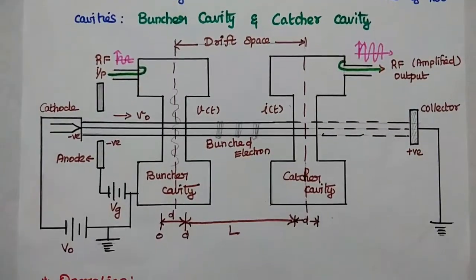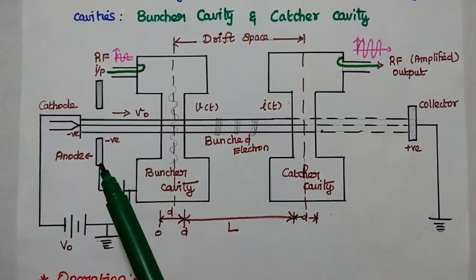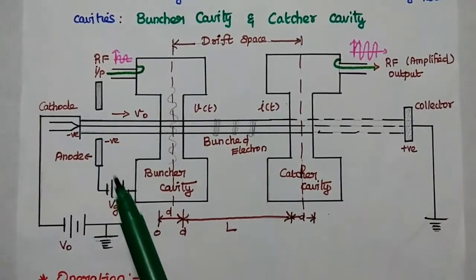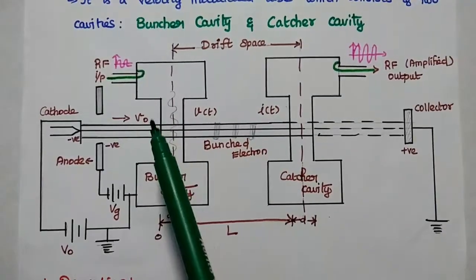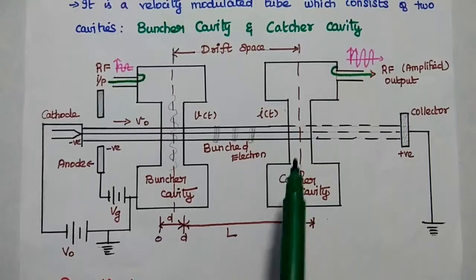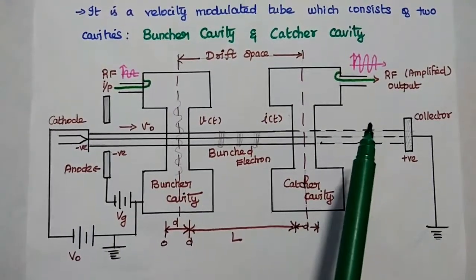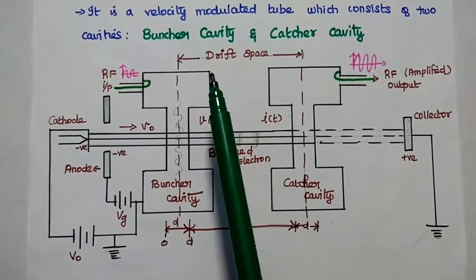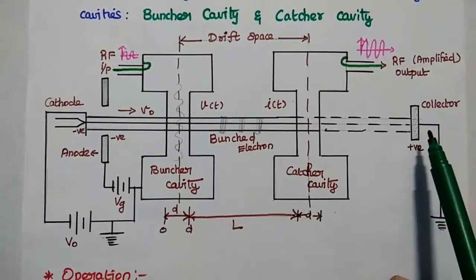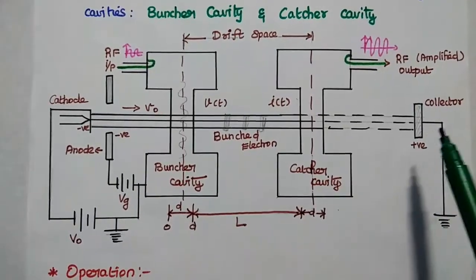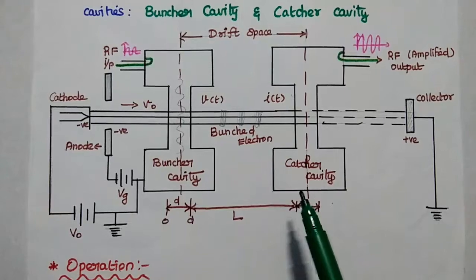This is the diagram of the two-cavity klystron amplifier. It consists of an electron gun with a cathode and an accelerating anode. The buncher cavity receives the RF input signal which is to be amplified. The next one is the catcher cavity, from where we take the amplified RF output signal. The space between these two cavities is known as drift space, denoted as capital L. There is a collector at the end of this tube, which is at a highly positive potential to receive the electrons from the catcher cavity.